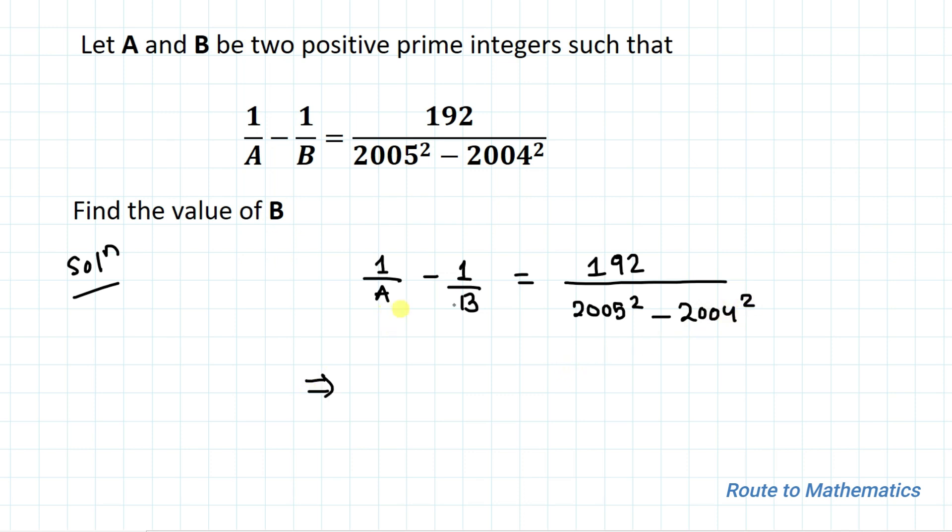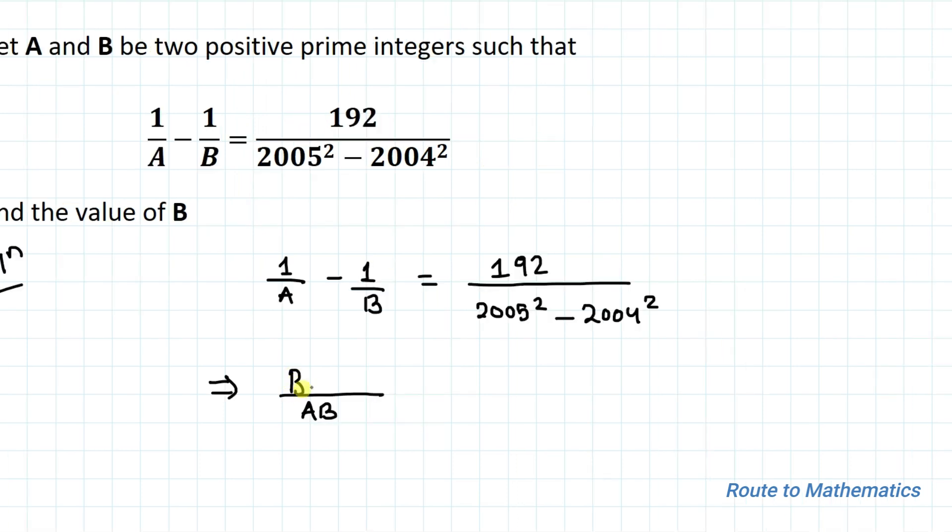We have (B - A)/AB in our numerator equals 192 divided by the denominator. Here we will apply the algebraic identity x² - y² = (x + y)(x - y).